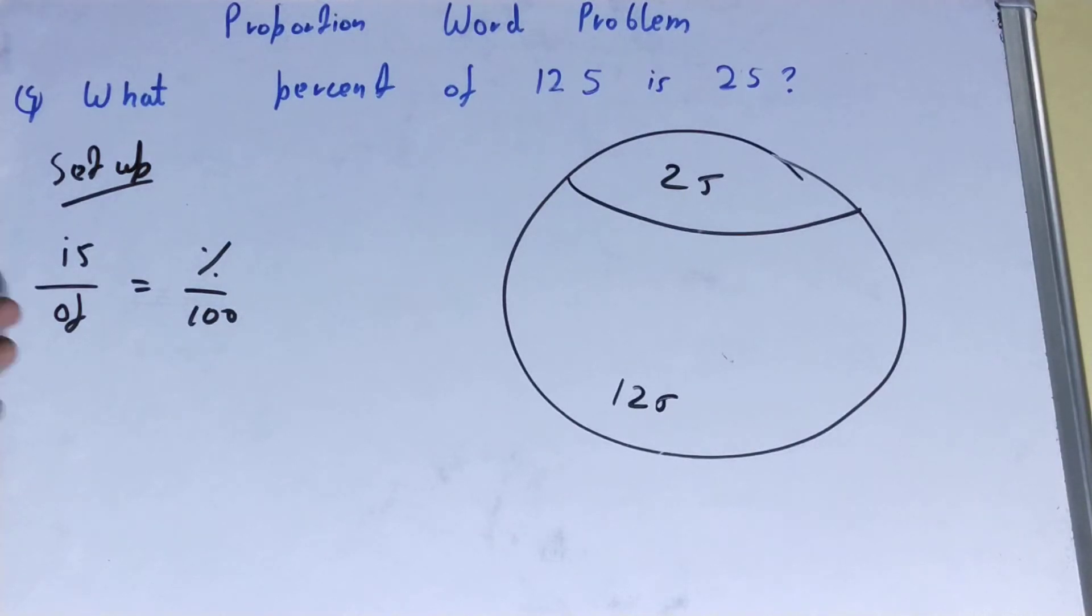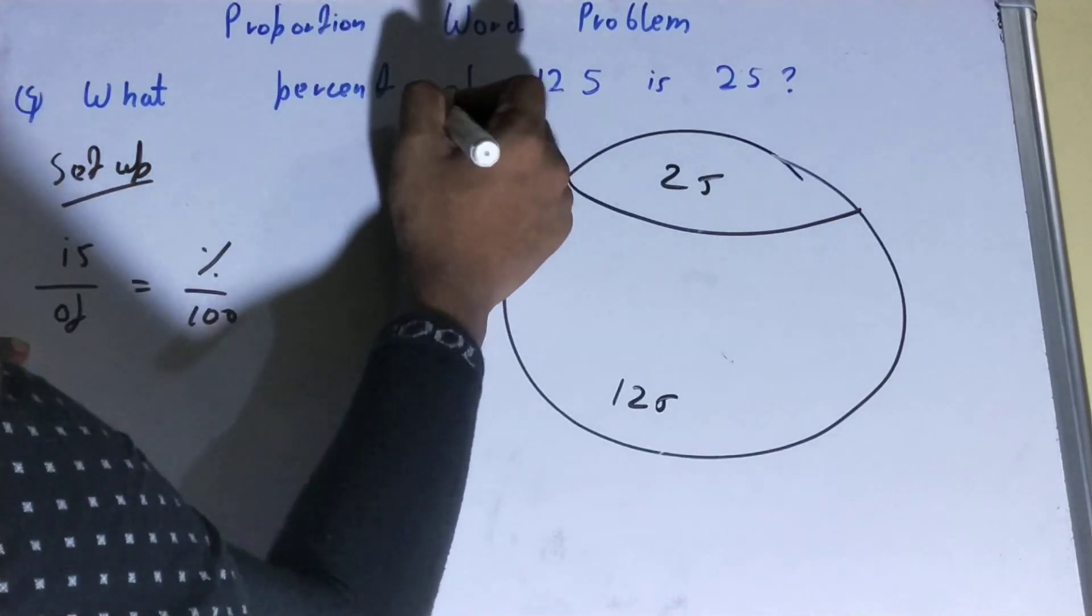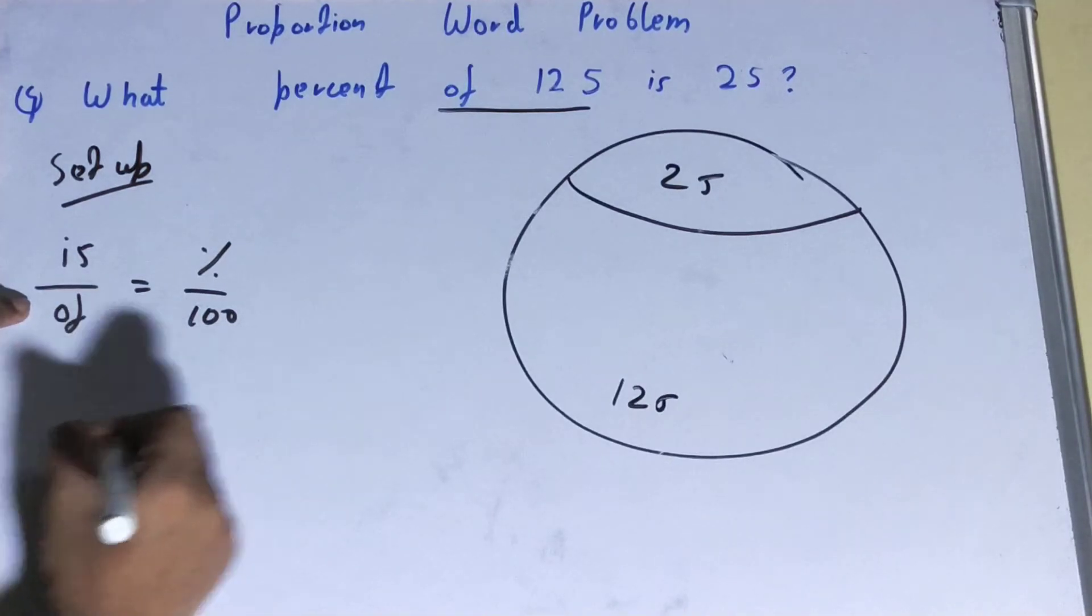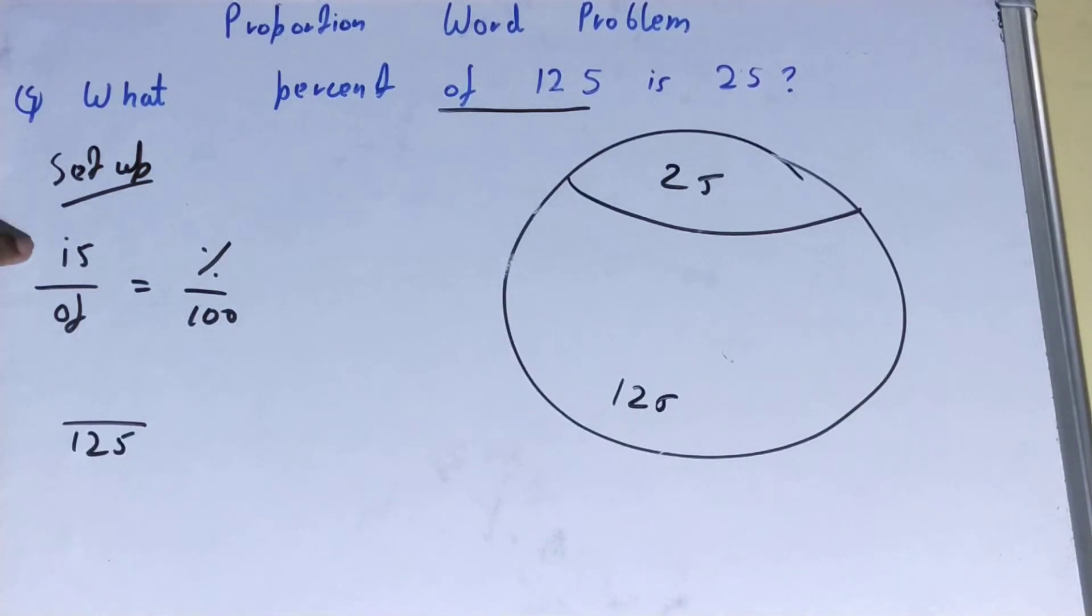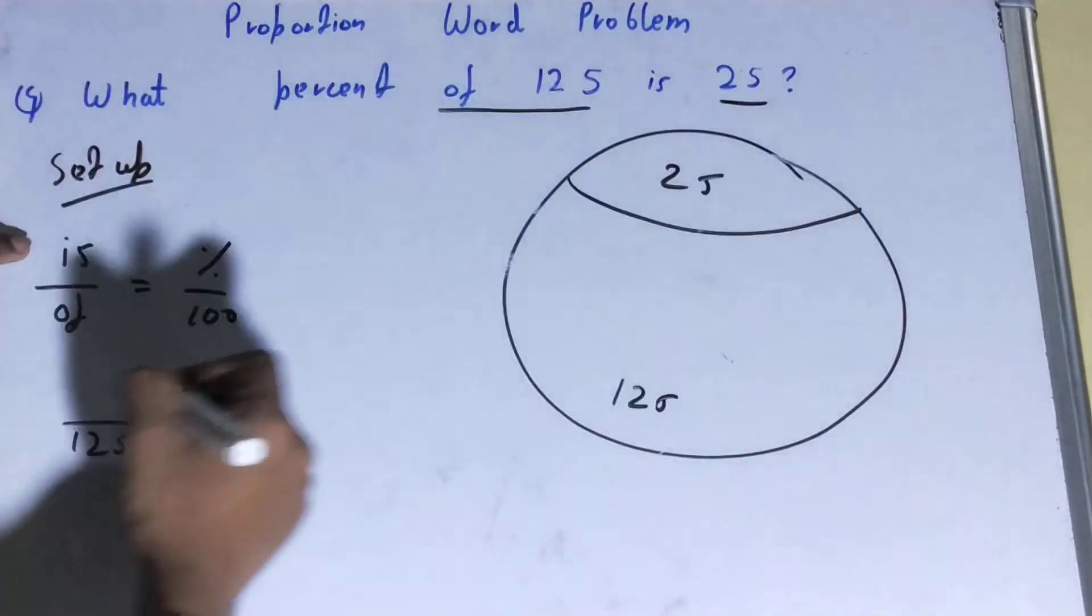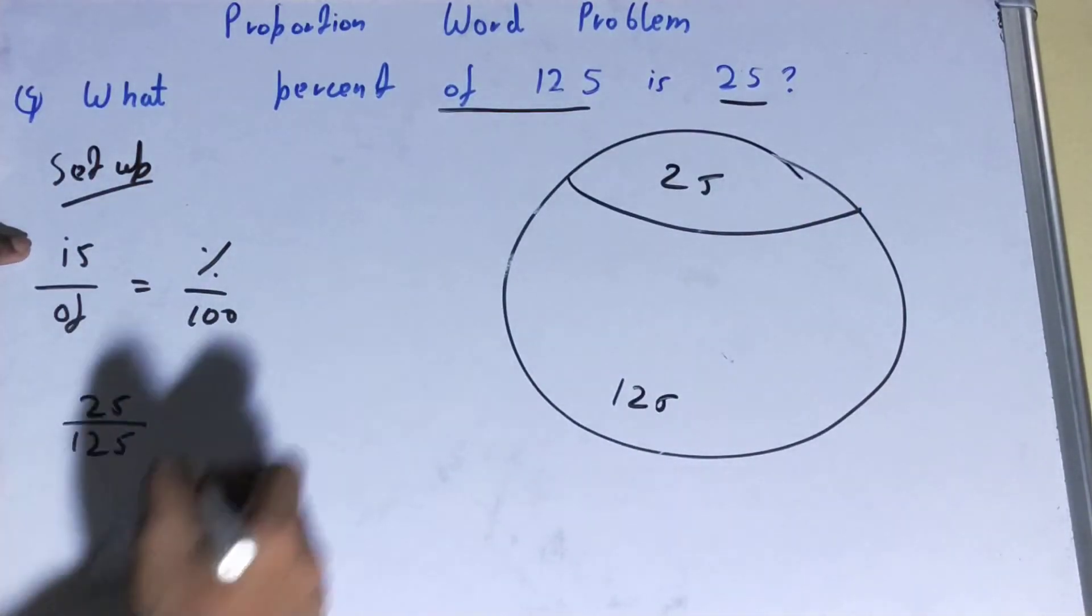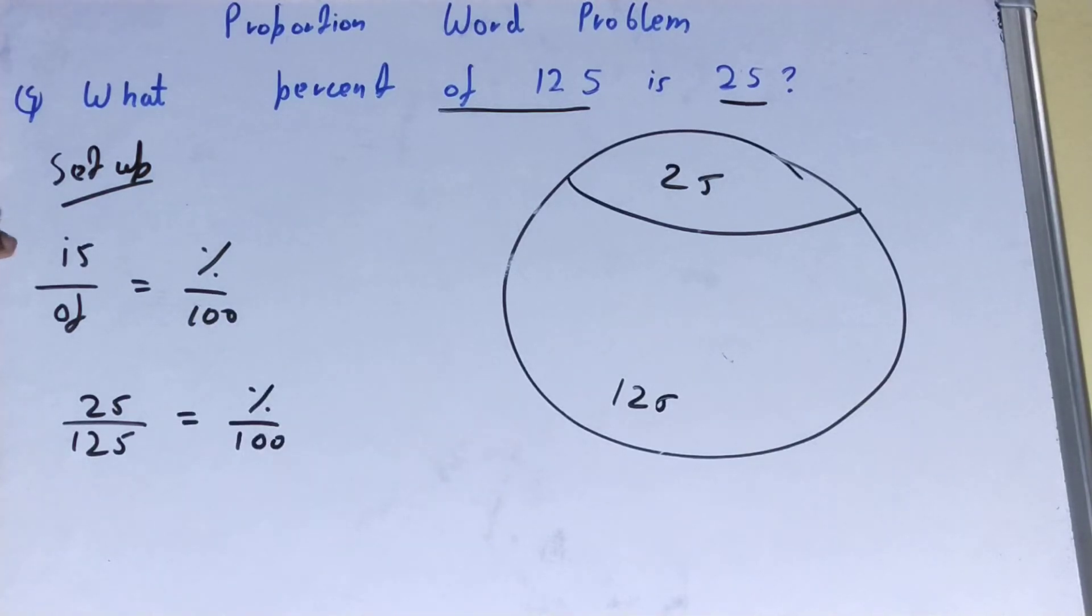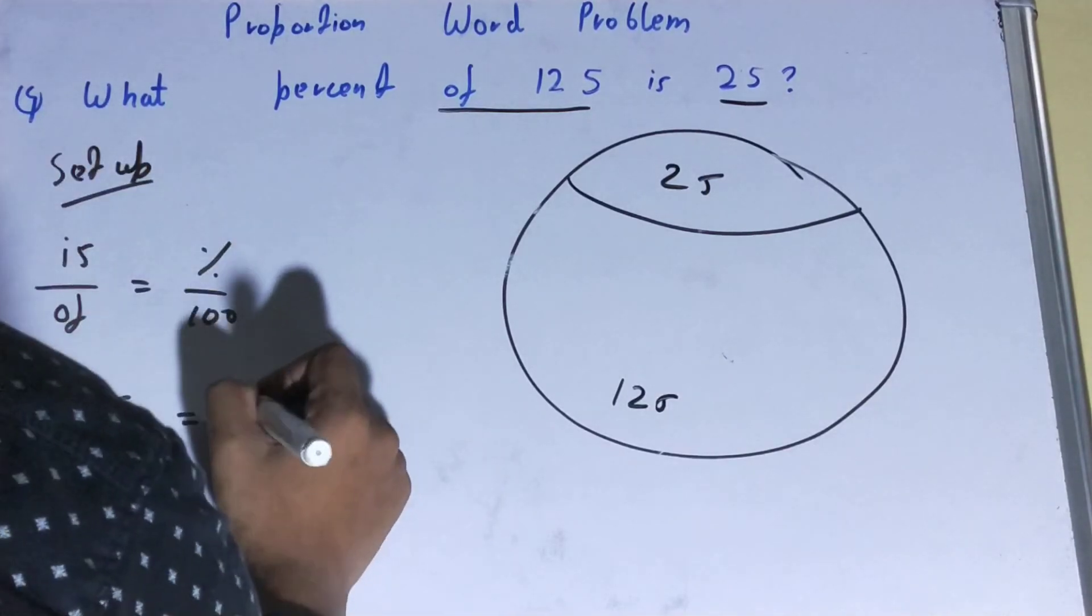Generally, you have to find one quantity and the others will be given. In this question, you are given 'of 125', so 125 is given. 'Is' you are given as 25. Percent is not given. So let's take the percent as x.